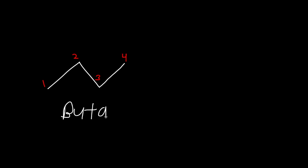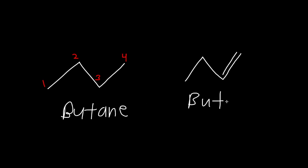Now, if we were looking at a bond-line structure, we'd do the same thing. If I had a zigzag structure, how many carbons are there? You count each point: one, two, three, four — four carbons. We said four carbons is called butane. Now if I gave you another example where there's a double bond in the structure, instead of calling it butane, we would call it butene, meaning it has a double bond.